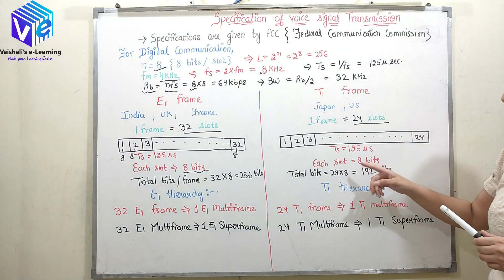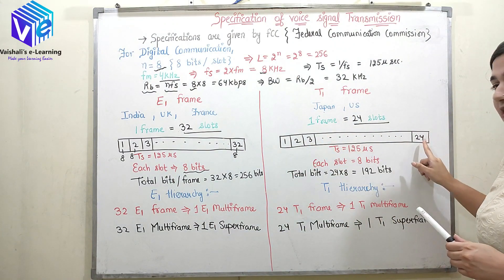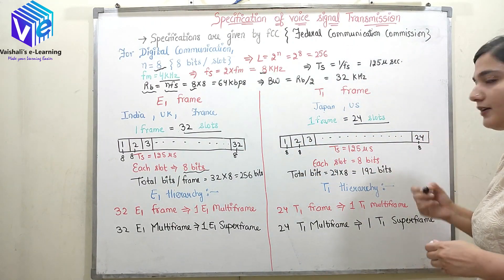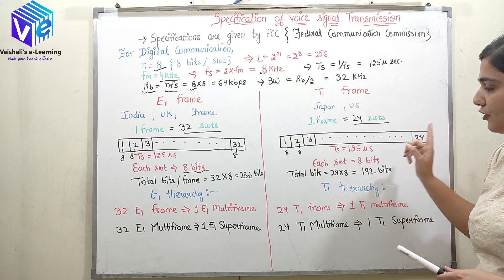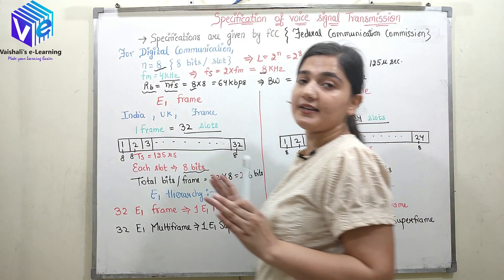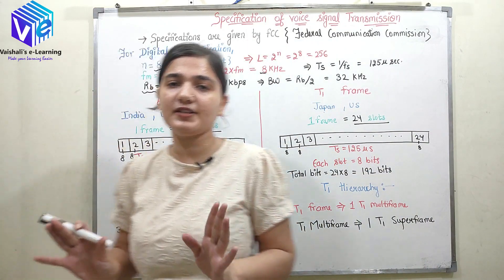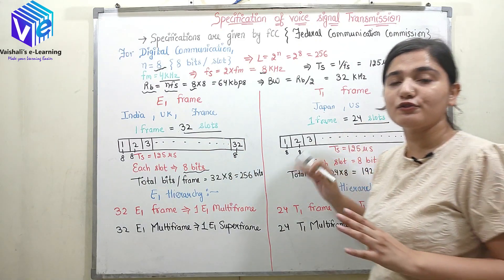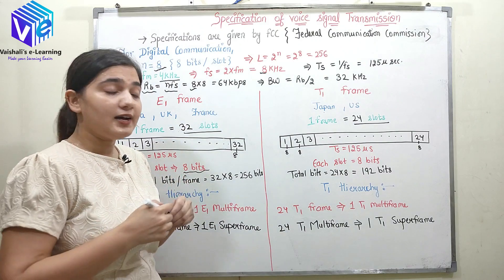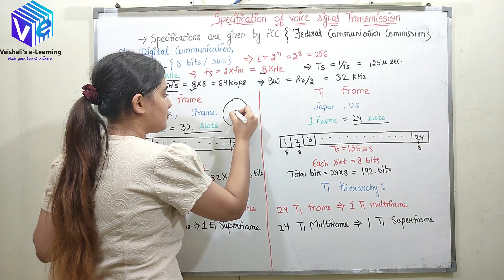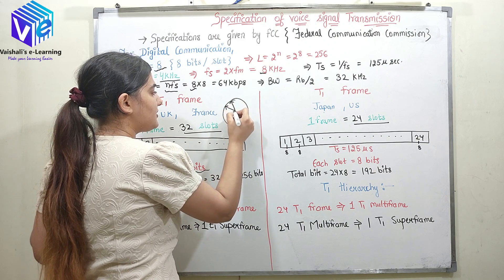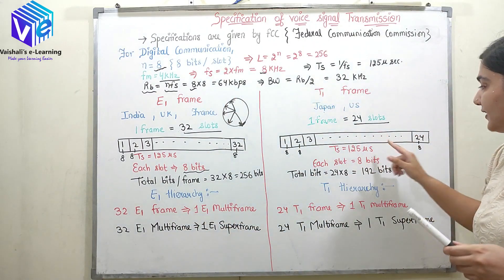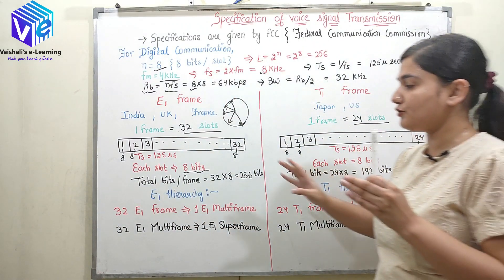For the T1 frame with 24 slots, total bits = 24 × 8 = 192 bits. The basic difference is 32 slots for E1 versus 24 slots for T1. For the sampling commutator, the E1 commutator takes 32 sampled functions while the T1 commutator takes 24 sampled functions.